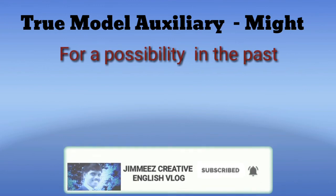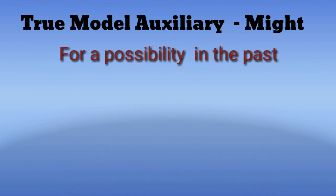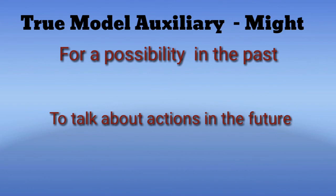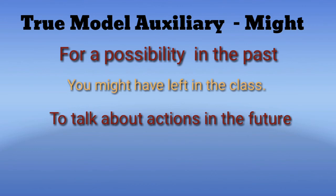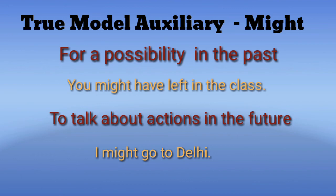The use of true modal auxiliary 'might' covers: a possibility in the past and to talk about actions in the future. For example: 'You might have left it in the class' — 'might' denotes a possibility in the past. 'I might go to Delhi' — 'might' denotes talking about actions in the future. Remember: would, should, could, and might are used to express future past.